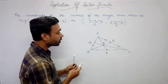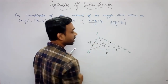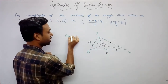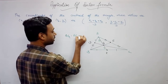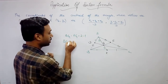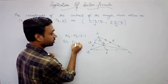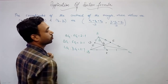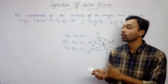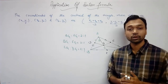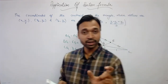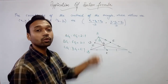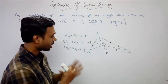An important property of the centroid: the centroid divides the median in the ratio 2:1. That means AG:EG = 2:1, BG:FG = 2:1, and CG:DG = 2:1. This is an important relation that we need to use in this application. I hope it is clear.